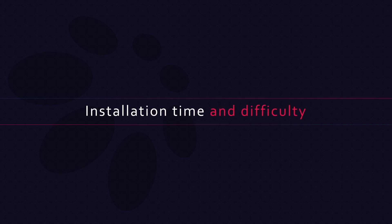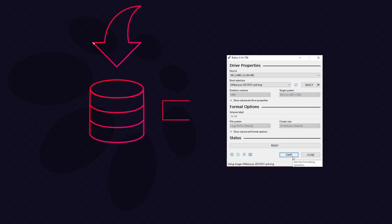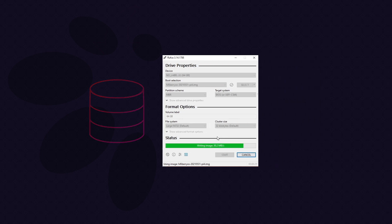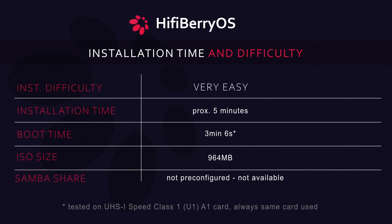When it comes to installation, the first steps are pretty much the same as with other players out there. You need to download the image of the system and write it via Rufus or Balena Etcher to your SD card, then insert it into your Raspberry Pi and boot up. The first boot is quite slow — there is even a mention of it in the HiFiBerry OS documentation — as the system checks and tries to recognize your hardware and automatically configures it.